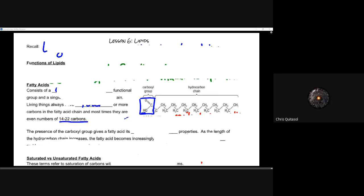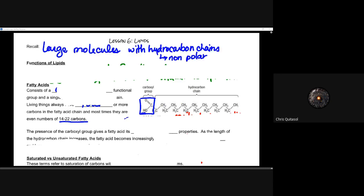Welcome to lesson six where we look at lipids. I wanted to do these two lessons close together because you'll start to see similarities in terms of how organic chemistry components are important — those reactions are consistent regardless of the type of biological molecule. When you look at lipids, it's important to recognize that these are going to be larger molecules with hydrocarbon chains, which makes them non-polar.